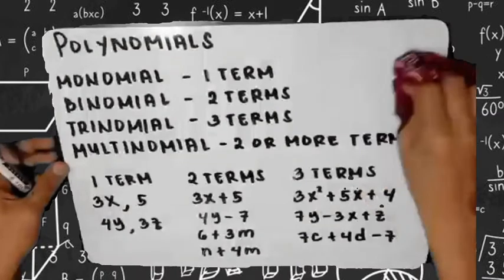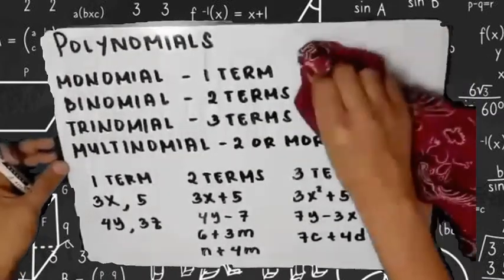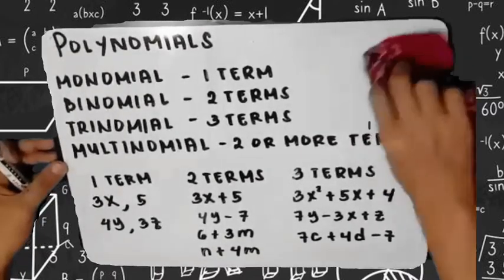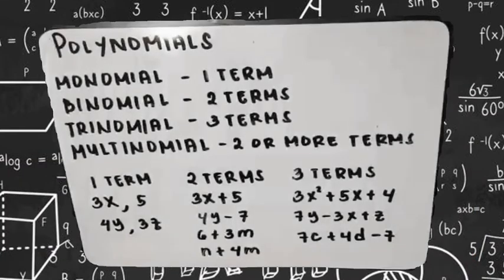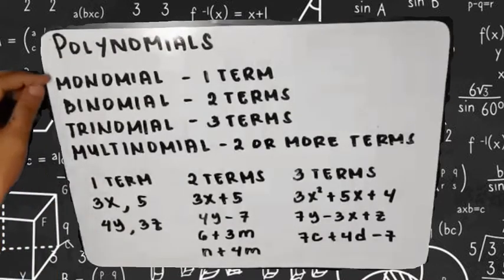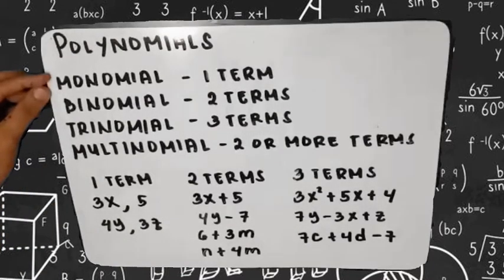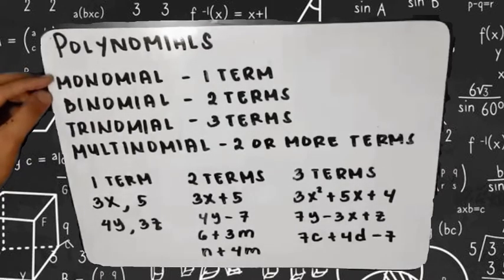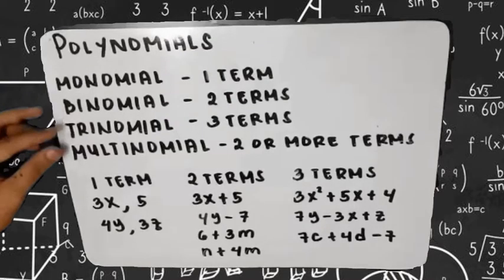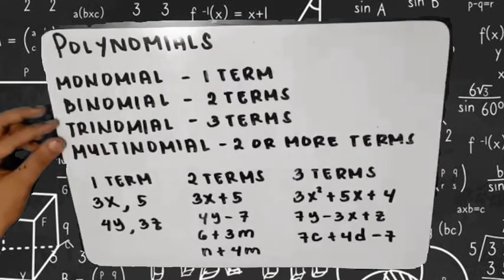To better understand polynomial expressions, we will be having examples later. Let's start with types of polynomials in terms of number of terms. We have monomial — if the number of terms in the given expression is 1, that is a monomial. If there are 2 terms, that is called a binomial. If there are 3 terms, that is a trinomial. And if there are 4 or more terms, we can call them multinomial.